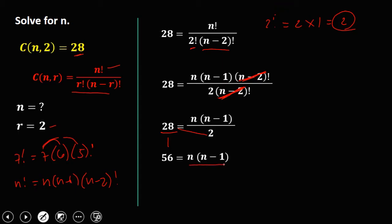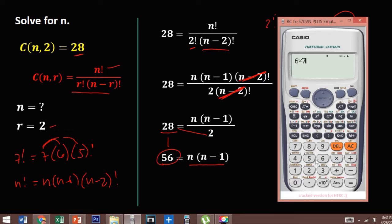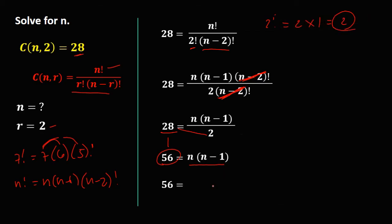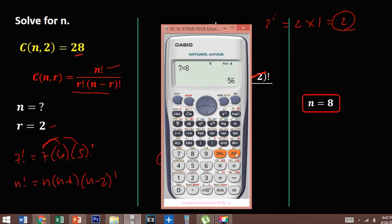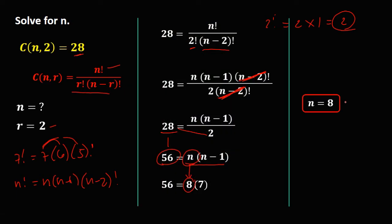So we have 56 equals n times (n minus 1). Since n times (n minus 1) is the product of two consecutive numbers, we need to find two consecutive numbers whose product is 56. Since 6 times 7 is 42 but 7 times 8 is 56, we write the bigger number first: 56 equals 8 times 7. Therefore n equals 8. To check: 8 choose 2 equals 28. So n equals 8.